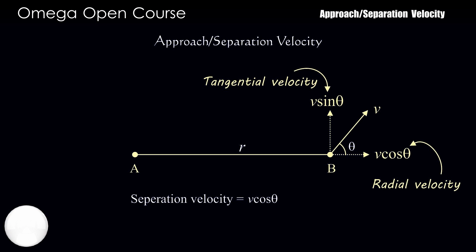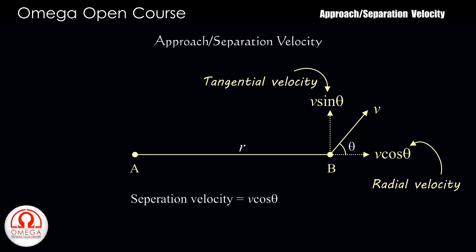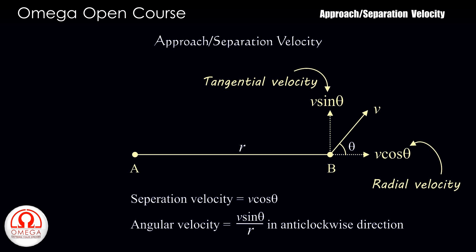The tangential component of the velocity causes a change in the direction of motion, and the angular speed of B with respect to A is given by tangential speed divided by distance R.